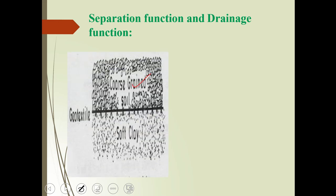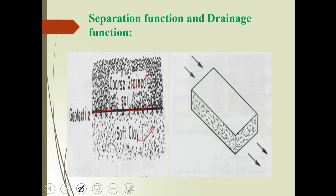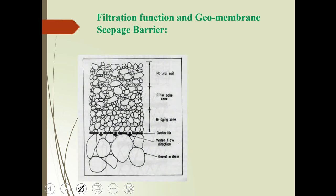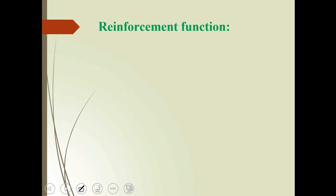The functions of geosynthetics in detail: the first is the separation function. Coarse grain soil and soft clay soil are different types — we can place geosynthetic material between two different materials to use it as a separation material. The filtration function allows us to place a geotextile next to hard rock or gravel material to act as a seepage barrier or filter.